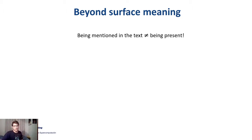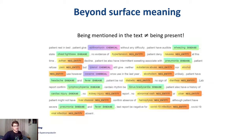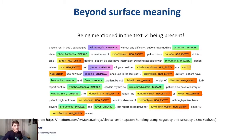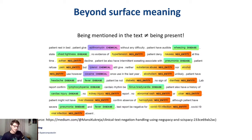For example, in the example we just saw, many entities were negated. So we could also use this type of information to characterize our patients and try to create a profile for text similarity.